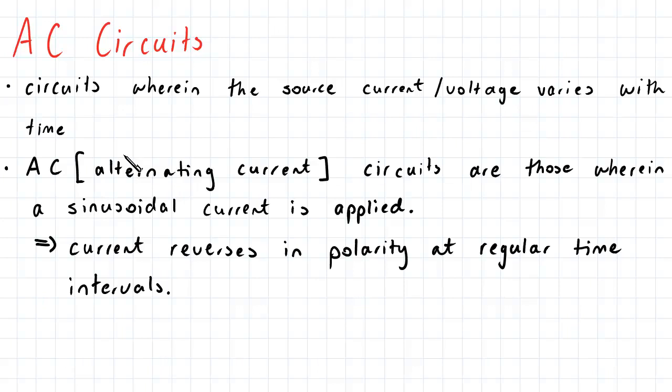And so therefore, what actually happens in reality is that the current reverses in polarity at regular time intervals. And these regular time intervals are dictated by the nature of the sine or cosine function, which characterizes each circuit.